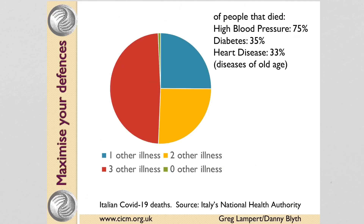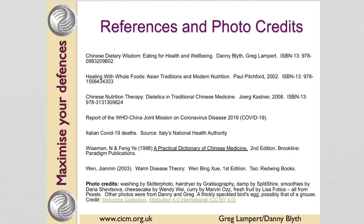Looking at figures from Italy, a very large percentage of those who passed away with coronavirus had one, two, or three chronic illnesses. Thanks for listening.